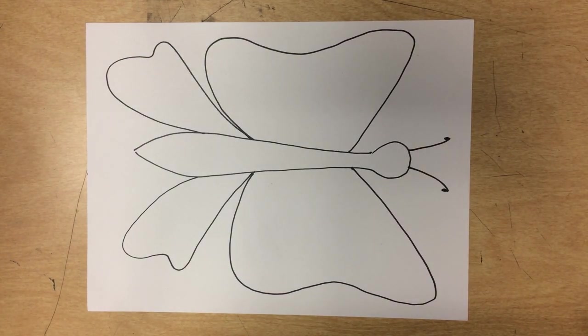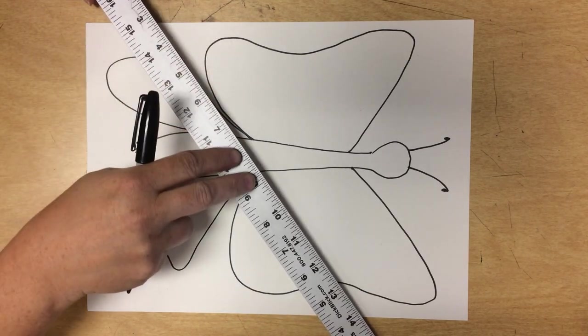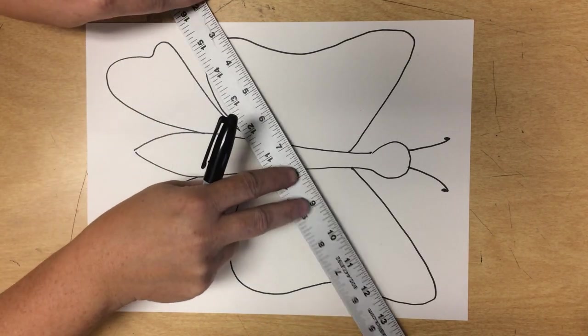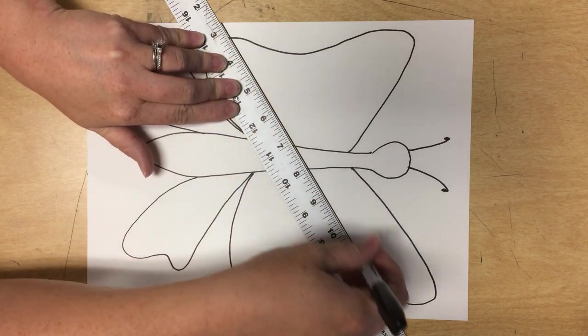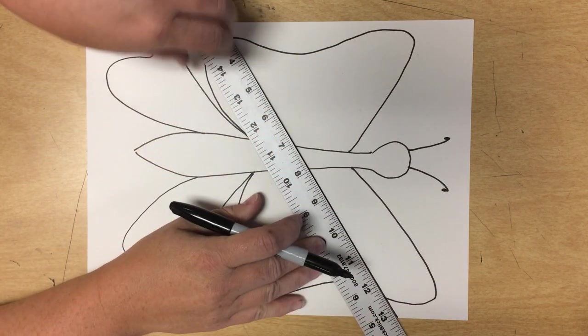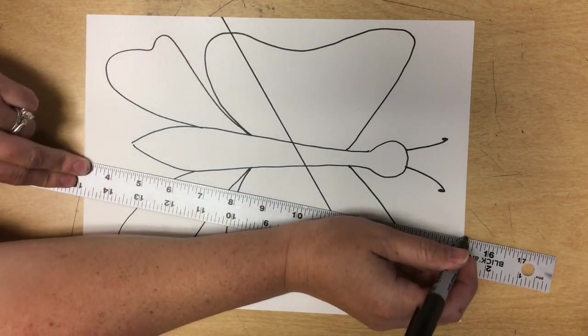After you have your animal outlined, you're going to break up your paper into at least 10 different sections. You're just going to lay your ruler down and draw a line from one edge of the paper to the next.